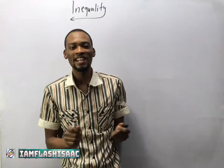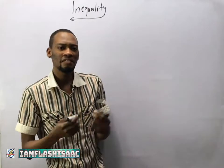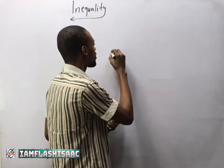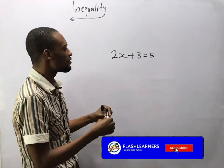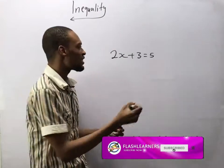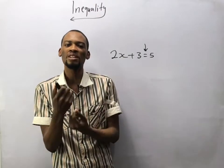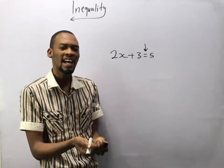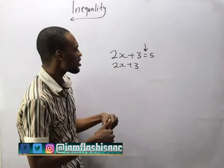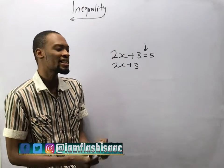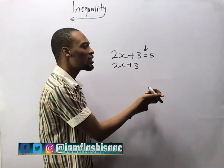Hello guys, I am Flash Isaac, and today I'll be taking you through inequality. If I say something like 2s plus 3 equals 5, this is simply an equation because there is an equality sign. On the other hand, if you have something like 2s plus 3 with no equality sign, this is an expression.